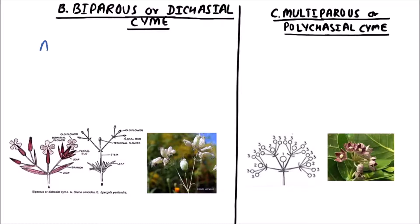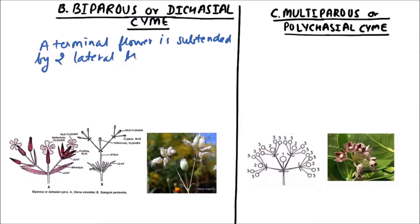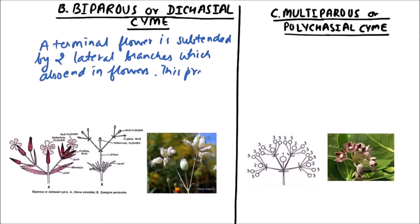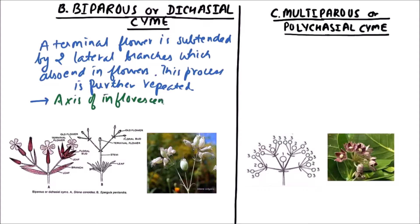In biparous cyme, a terminal flower is subtended by two lateral branches which also end in flowers, and this process is further repeated. The axis of inflorescence is sympodial.